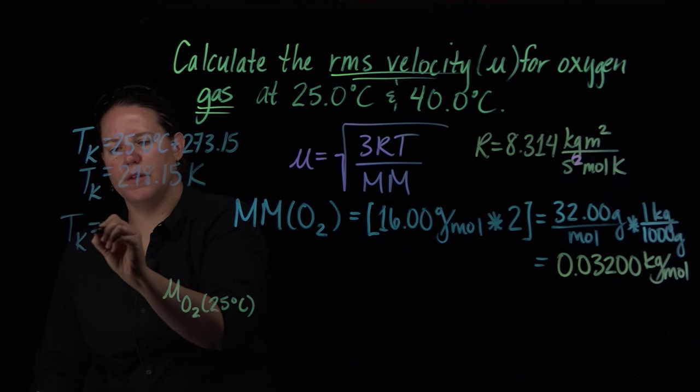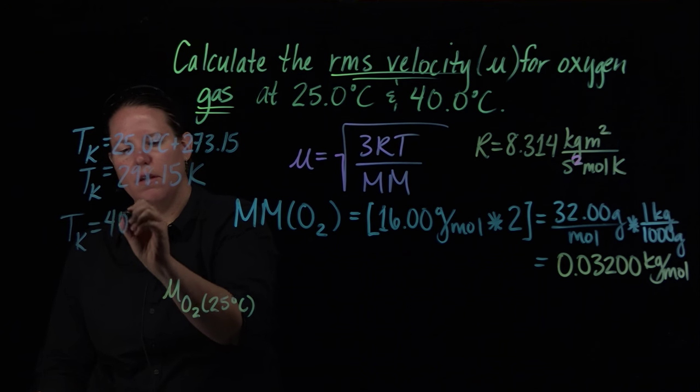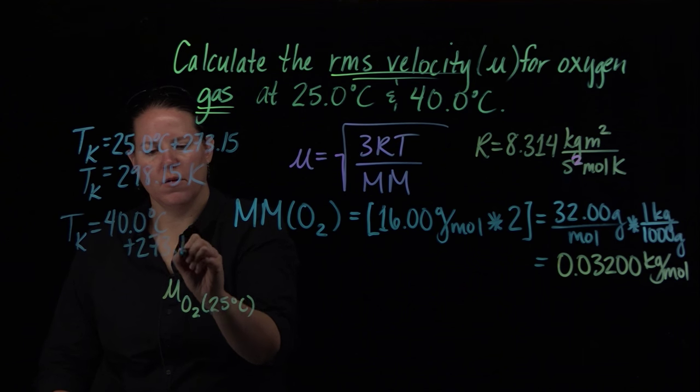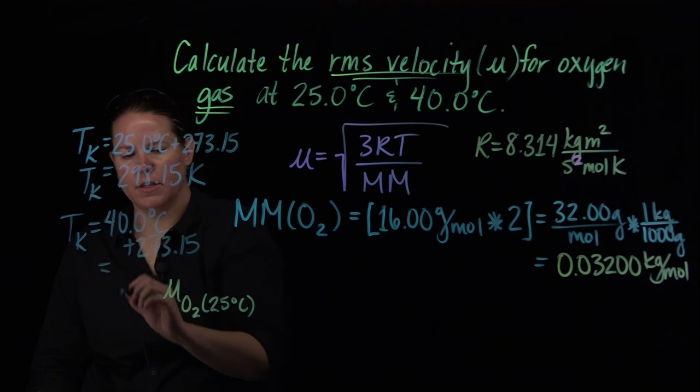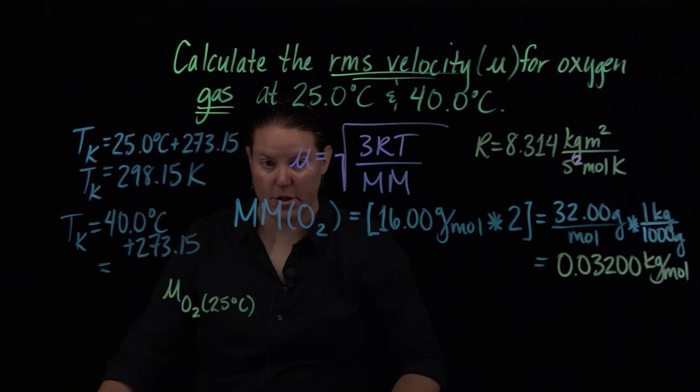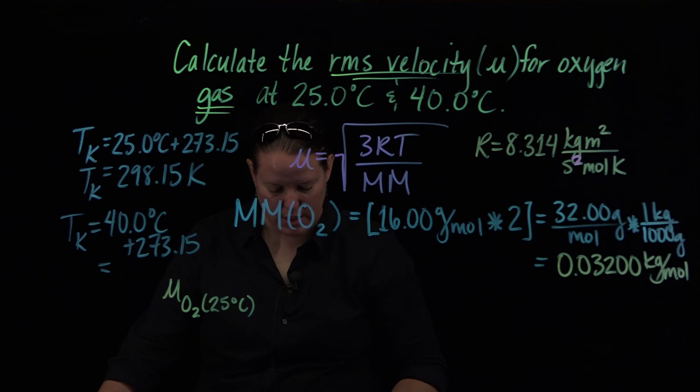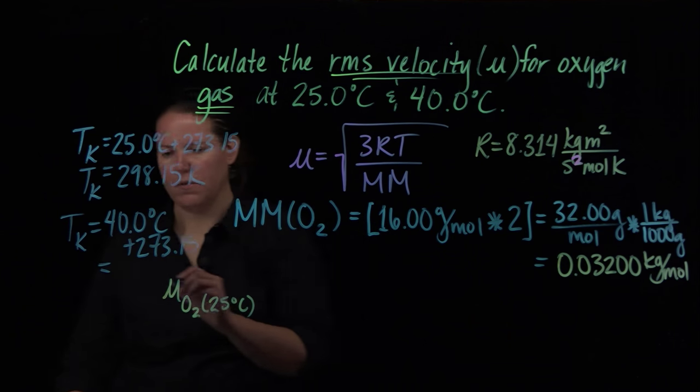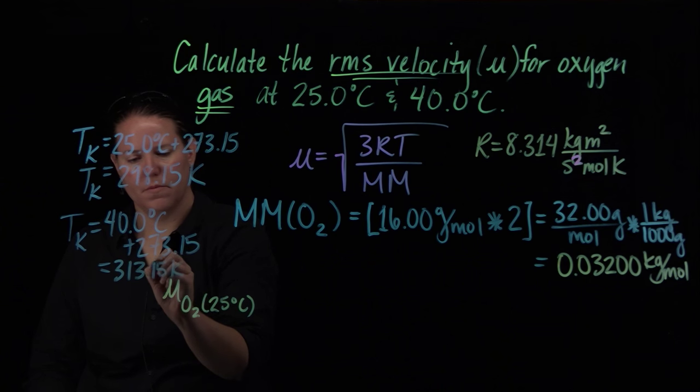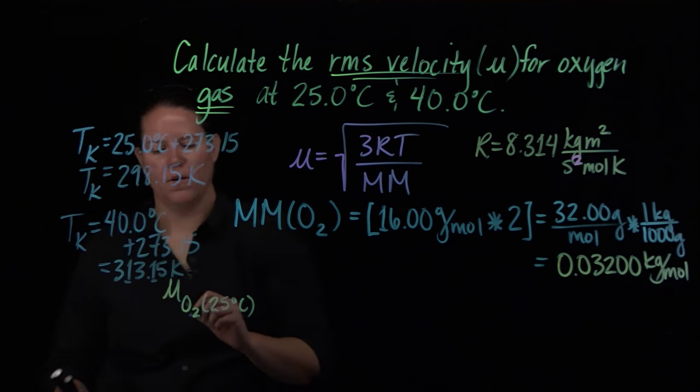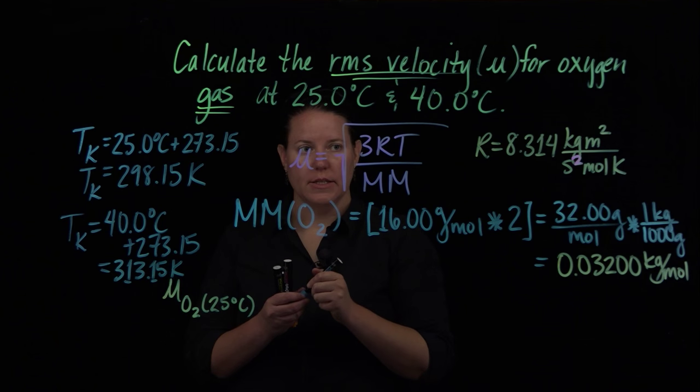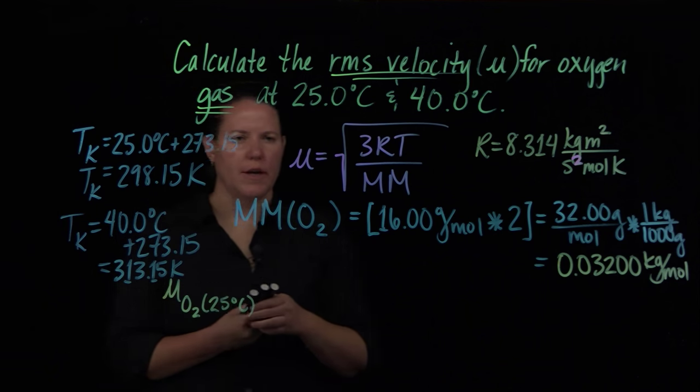The temperature in Kelvin for the second temperature, which is 40°C, plus 273.15 is going to be maybe 313. I'm going to double check with my calculator because it's handy and dandy and why not. Yep, 313. So that gives us a sense of everything is converted as it needs to be.